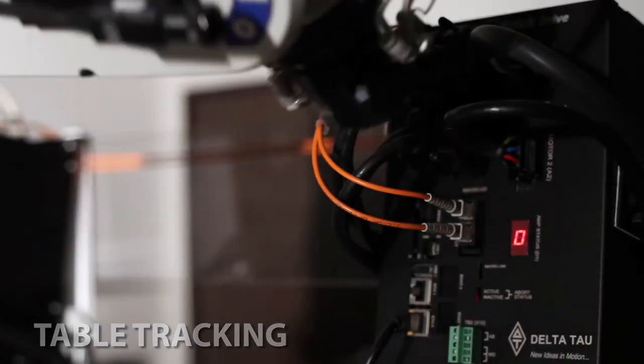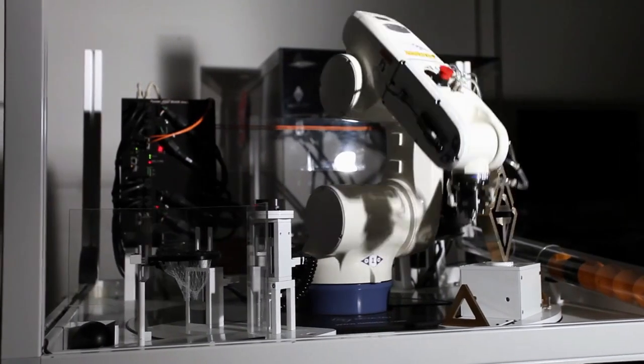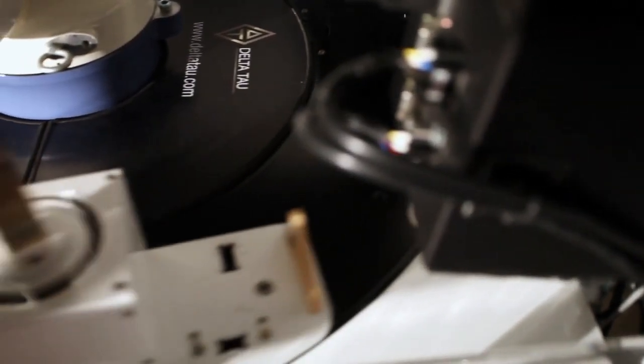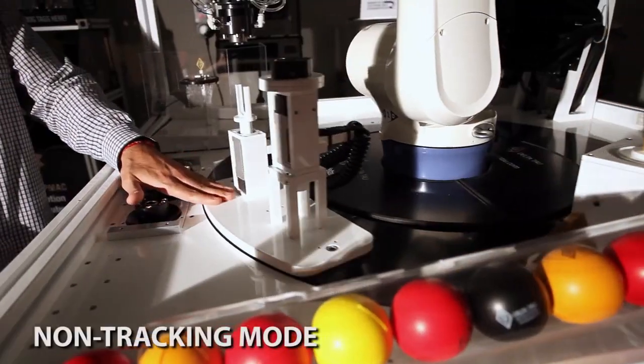This demonstration showcases Power PMAC's remarkable ability to synchronize the motion of the entire robot arm with the master position of another axis. In this case, the table's position at very high speeds. The robot tracking for the ring table is actually done in the kinematics, so you can actually switch between two modes.